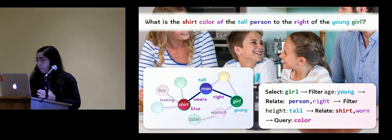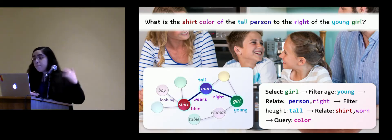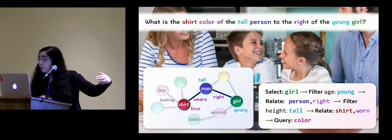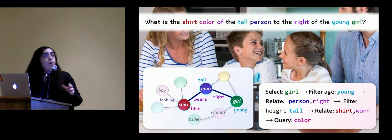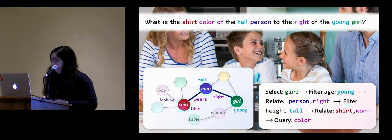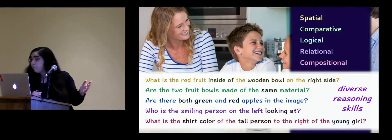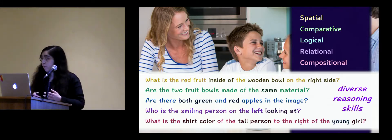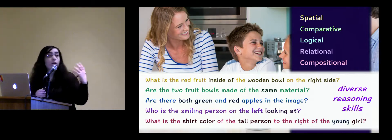We built a question engine that automatically generates millions of such questions by recursively converting paths from the graph into natural language phrases, using a recursive grammar that starts from the graph, translates paths into symbolic form, and then converts them to questions. The questions cover a variety of reasoning skills, including spatial reasoning, comparisons, logic — such as questions about and, or, not — relational reasoning, and compositionality and multi-step inference.